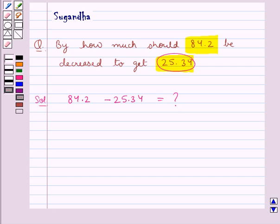To do the subtraction of these two decimal numbers, first we need to convert the given decimal numbers to like decimals, that is we need to make the decimal places of both the decimal numbers the same.